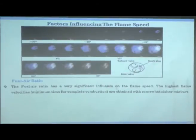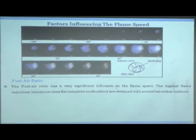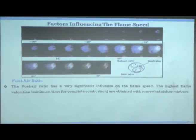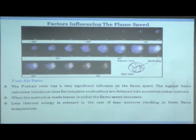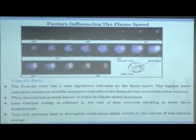Fuel-air ratio significantly influences flame speed. The highest flame speeds are obtained with a somewhat richer mixture, which also relates to maximum power output. When the mixture is made leaner or richer, flame speed decreases on both sides. Less thermal energy is released with lean mixtures, resulting in lower flame temperature, while very rich mixtures lead to incomplete combustion and lower heat energy release.